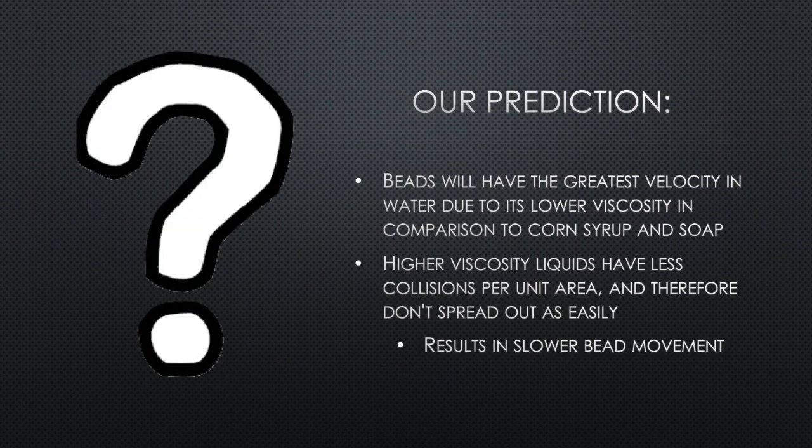We predicted the velocity of particles in water would be greater than that of particles in corn syrup and soap. This is because the significantly larger mass of corn syrup and soap means that there are fewer molecules in a given space, resulting in fewer collisions per unit area. Therefore, the molecules won't spread out as easily, which gives the liquid a higher viscosity or higher resistance to flow.